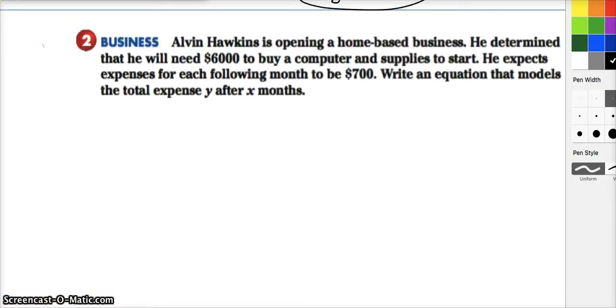Alvin Hawkins is opening a home-based business. He determined that he will need $6,000 to buy a computer and supplies to start, so that's a startup fee, and he expects expenses for each month to be about $700. We're going to write an equation that models the total expenses Y after X months. So X is the number of months that we're dealing with. Y will be the total expenses. So Y equals is a fair way to express this. Now, he's got a base cost of $6,000 that it's going to cost just to start the business, but that's not a recurring cost. The recurring cost would be the $700 monthly, so that would be $700 times the number of months that he is in business or that he's working on this particular endeavor. And so the total expenditures or expense for however many months would be 700X, that's per month, and plus the original cost of $6,000. So here you can probably recognize that this equation is in slope-intercept form.